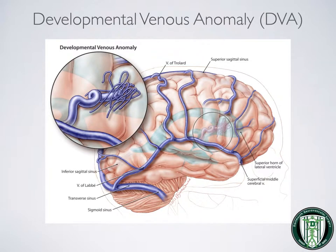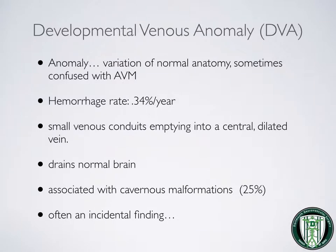This illustration demonstrates a DVA, and this is a normal variant of anatomy. You can see in the blow-up picture very small, tiny veins that feed into a larger vein — this is a hallmark of a DVA. A DVA is a variation of normal anatomy. It sometimes can be confused with AVMs, or arteriovenous malformations.